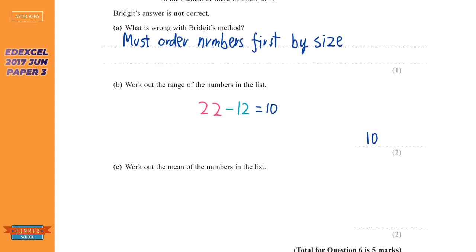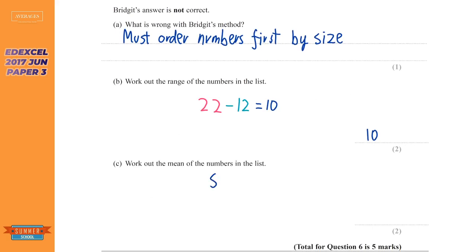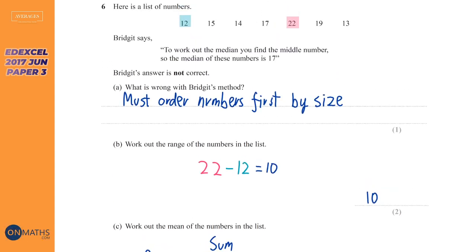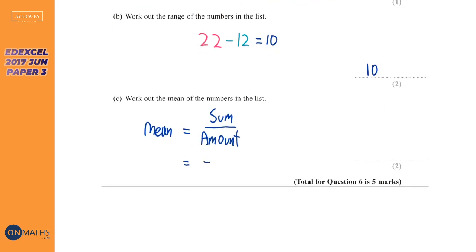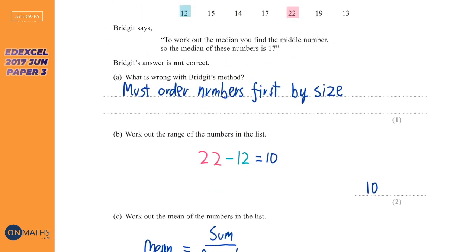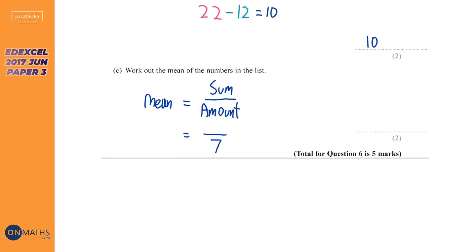Finally, work out the mean of the numbers. Mean equals the sum of the numbers over the amount. There are seven numbers so it's over seven. To calculate the sum I'll use my calculator: 12 + 15 + 14 + 17 + 22 + 19 + 13 = 112. Then 112 divided by 7 gives us the answer 16.